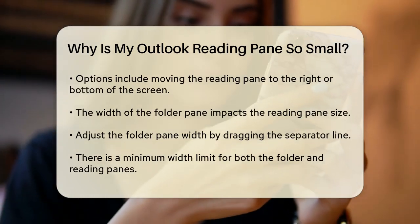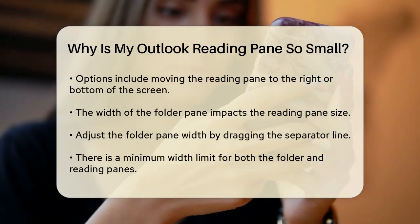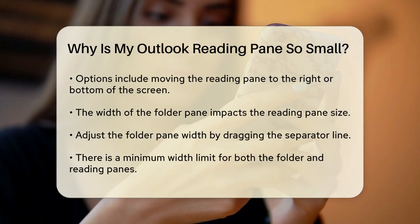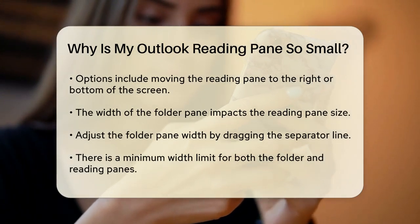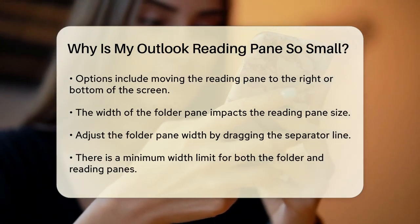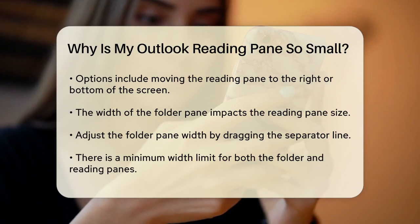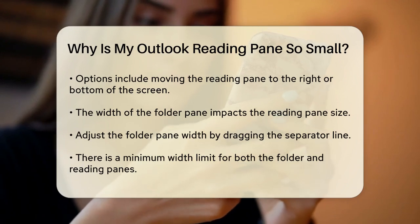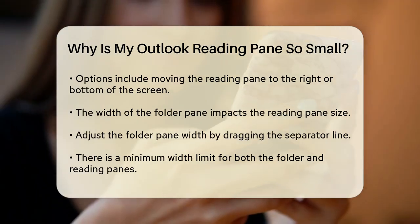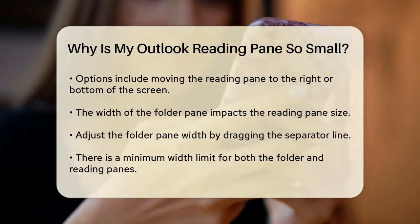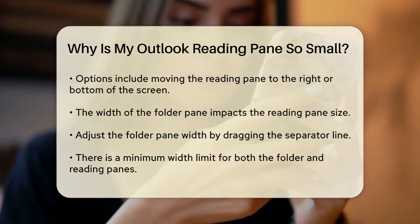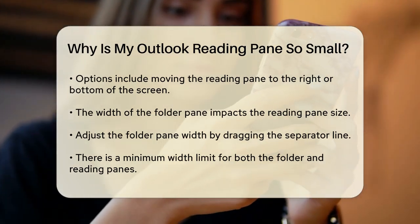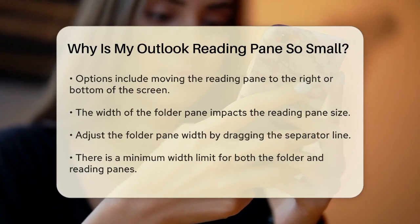Another reason could be the width of the Folder Pane. The Folder Pane and the Reading Pane share the same window space, so adjusting one can affect the other. You can reduce or increase the width of the Folder Pane by moving your cursor to the line that separates the Folder Pane and the Messages, then click and drag it to the desired width. However, there is a preset minimum width for both the Folder Pane and the Reading Pane, which you cannot reduce beyond a certain point.